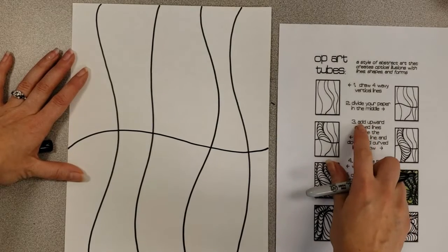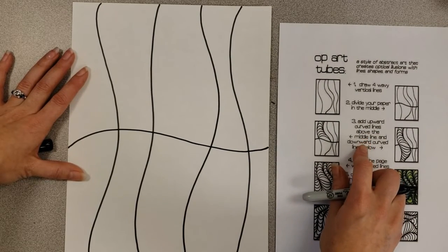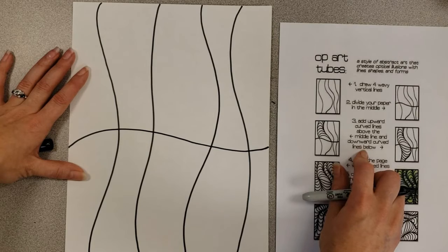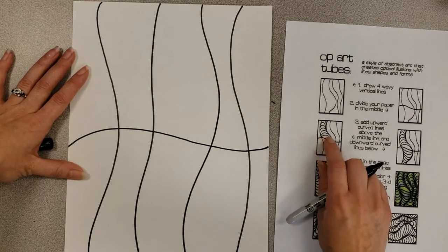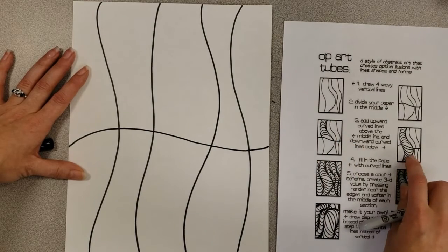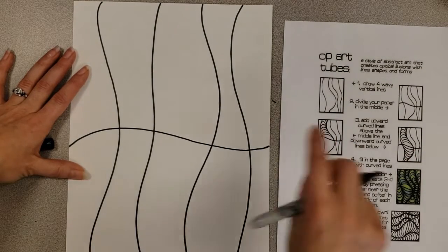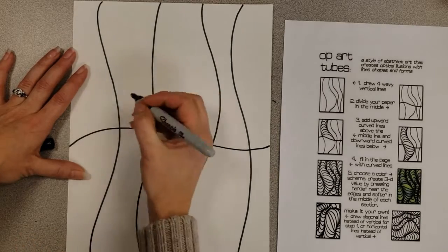Step three says add upward curved lines above the middle line and downward curved lines below. So you'll see right here they have the upward ones going above the line and downward ones below that line. So we're going to go ahead and start adding those in one of our sections.